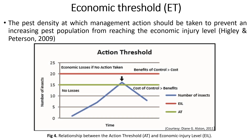Let's look at the relationship between EIL and ET with this illustration. Figure 4 shows the relationship between the action threshold and economic injury level. The ET is represented by the green line and is always set lower than the economic injury level, which is denoted by the red line, to provide lead time before the break-even point is reached and economic loss occurs.